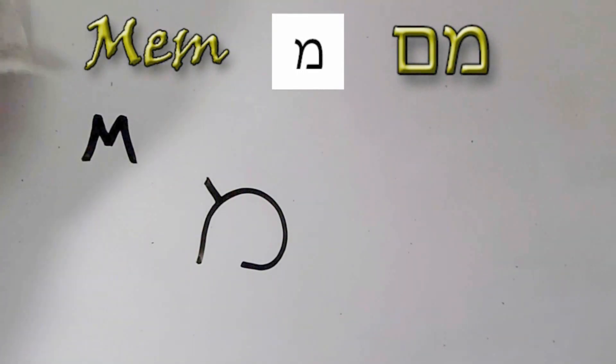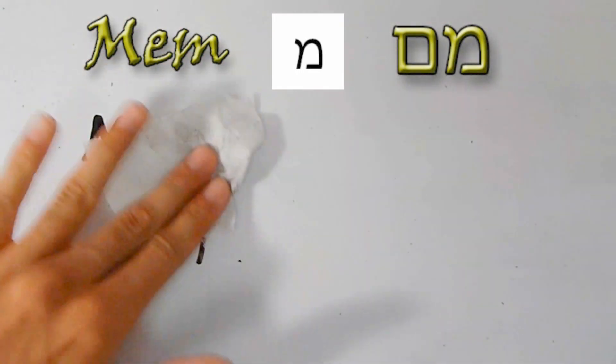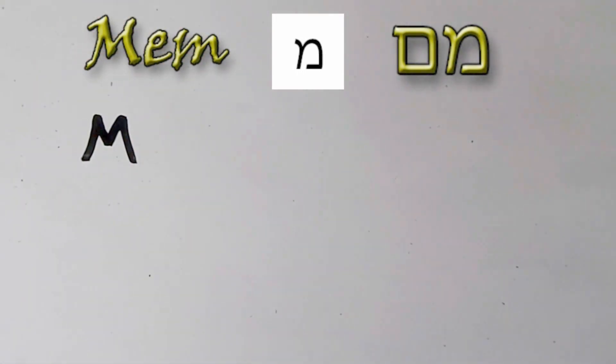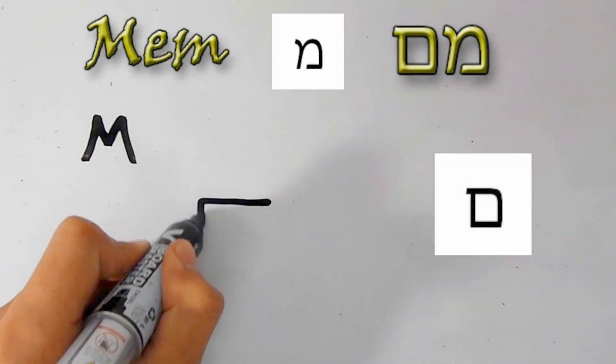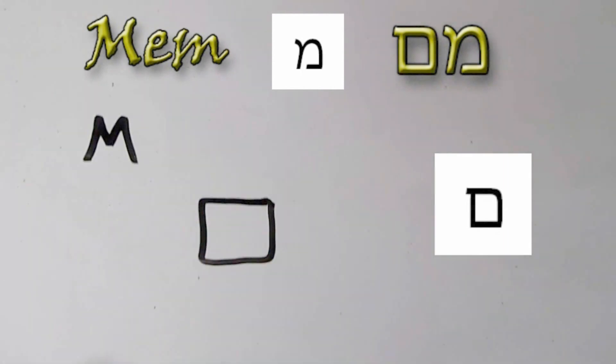Once again, whenever this letter comes at the end of a word, it has a different form. Like so. This is Mem at the end of the word.